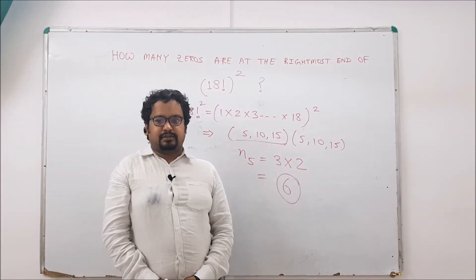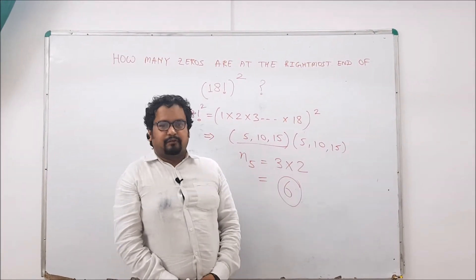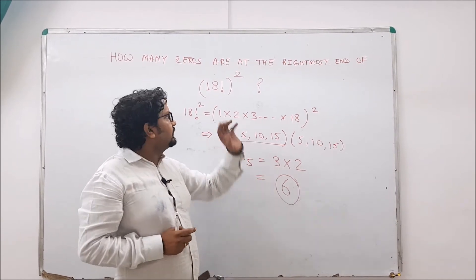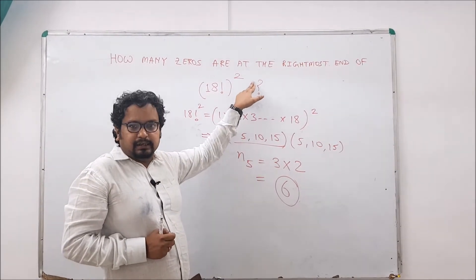Hello folks, the question today is from the number system. We need to find out the number of zeros at the rightmost end of 18 factorial squared. Now, 18 factorial means products from 1 to 18, and we are squaring it.